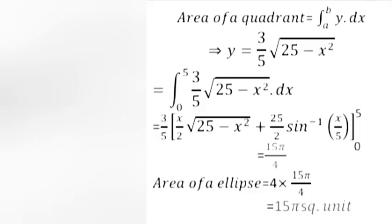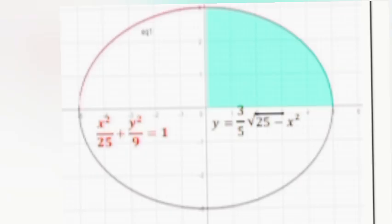Answer: Area of one quadrant = integral from 0 to 5 of y dx, where y = (3/5)√(25 − x²) dx = (3/5)[x/2 · √(25 − x²) + 25/2 · sin⁻¹(x/5)] from 0 to 5 = 15π/4. Area of ellipse = 4 × 15π/4 = 15π square units.